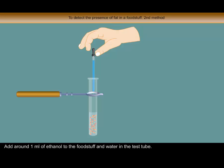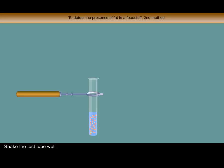Add around 1 ml of ethanol to the foodstuff and water in the test tube. Shake the test tube well.